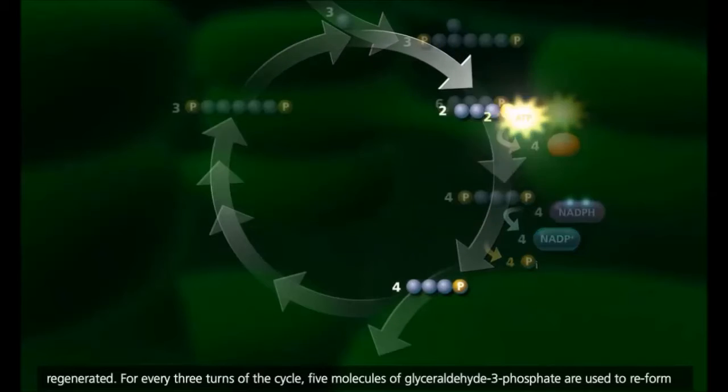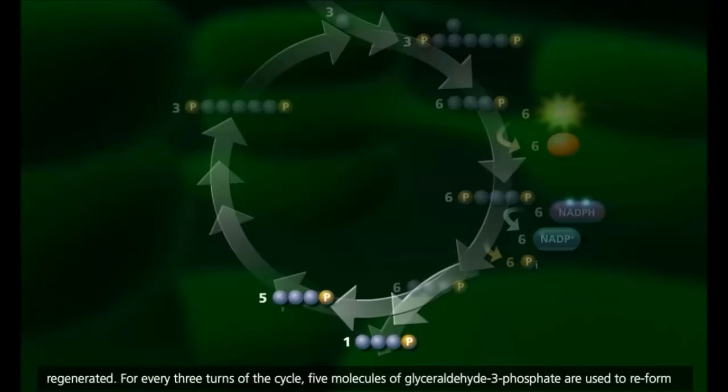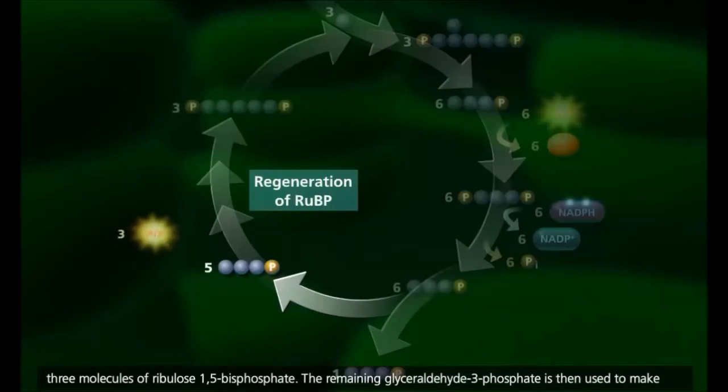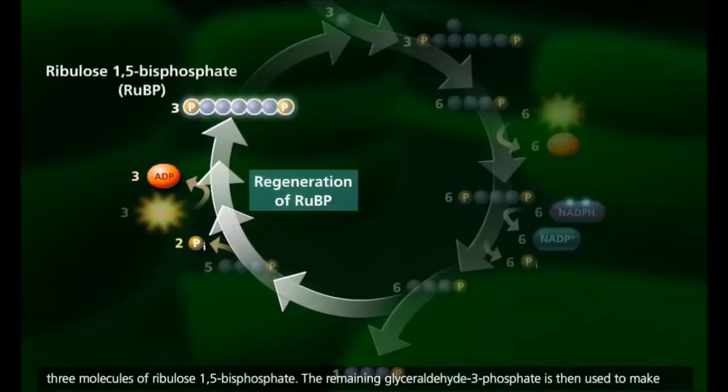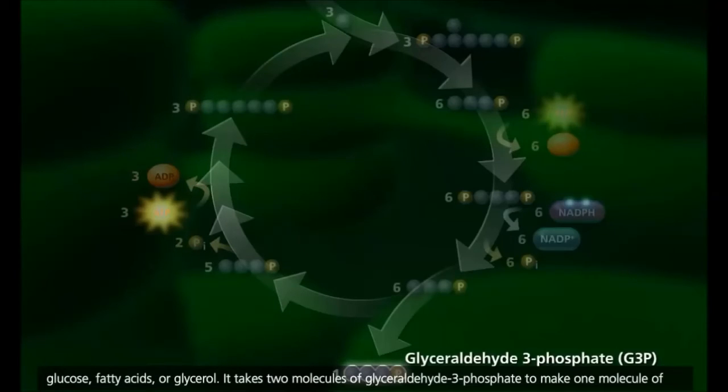For every three turns of the cycle, five molecules of glyceraldehyde-3-phosphate are used to reform three molecules of ribulose 1,5-bisphosphate. The remaining glyceraldehyde-3-phosphate is then used to make glucose, fatty acids, or glycerol.